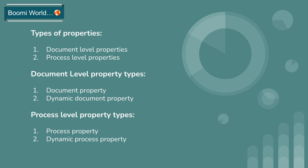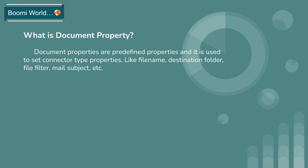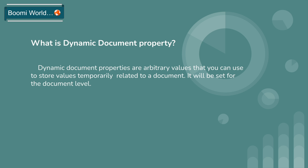First, what is document property? Document properties are predefined properties used to set connector-type properties like file name, destination folder, file filter, mail subject, etc. If you want to set a file name, you just need to choose that predefined document property, choose the type as file name, and set the file name value based on your requirement.